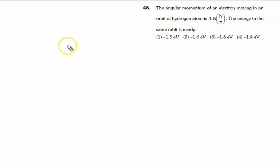The angular momentum of an electron moving in an orbit of the hydrogen atom is 1.5h upon pi. L is given to us as 1.5h upon pi. The energy in the same orbit.